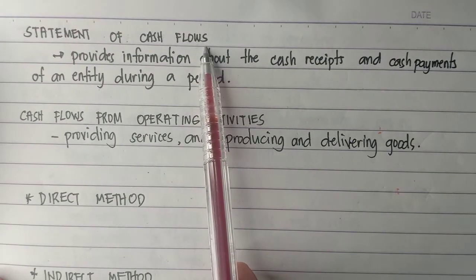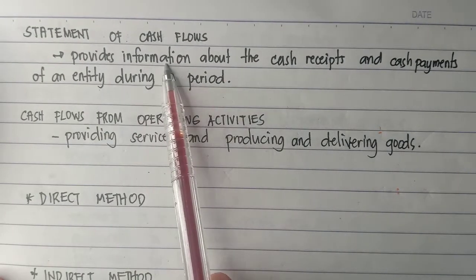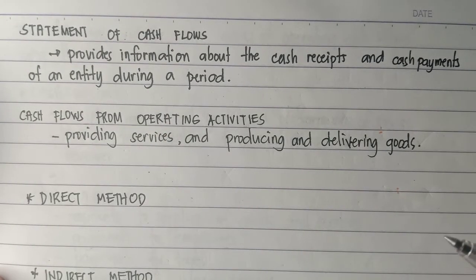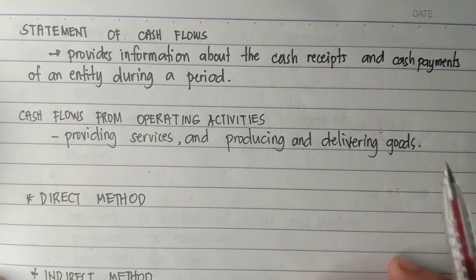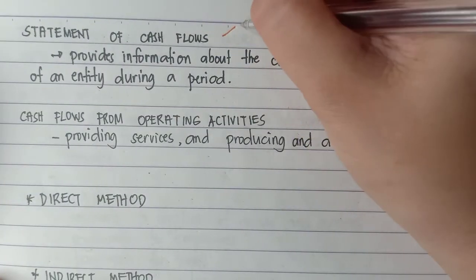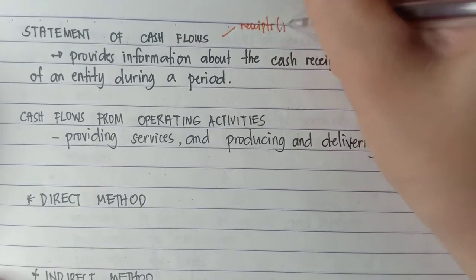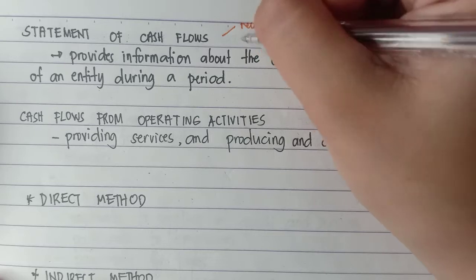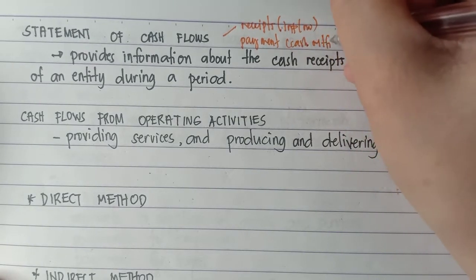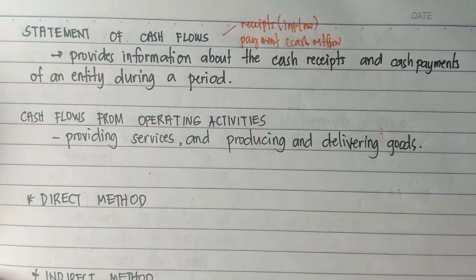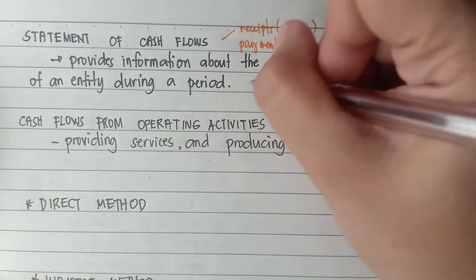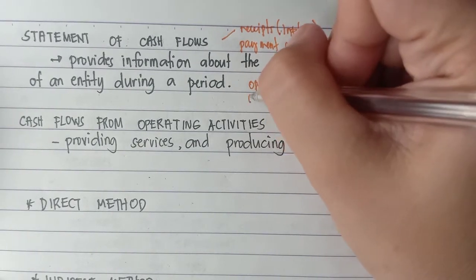So, statement of cash flows — when we say statement of cash flows, it provides information about the cash receipts and cash payments of an entity during a period. It is a formal statement that classifies the receipts or inflows and the cash payments or outflows into operating, investing, and financing activities. We already discussed those three activities in our previous videos.